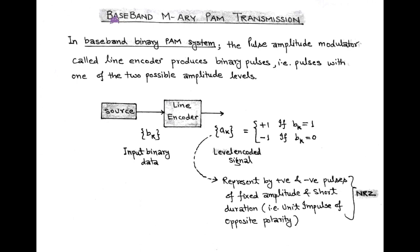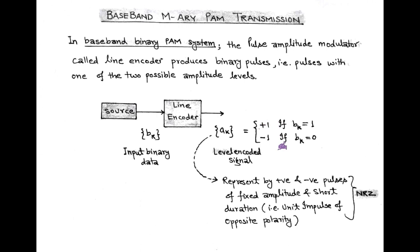Next, we are going to discuss baseband M-ary PAM transmission. As discussed in our last video lecture about the baseband binary PAM system: in this system, the pulse amplitude modulator — called a line encoder — produces a binary pulse having one of two possible amplitude levels denoted Ak. The value of Ak is +1 for input Bk = 1 and −1 for input Bk = 0. This level-encoded signal is based on non-return-to-zero (NRZ) coding and represented by positive and negative pulses of fixed amplitude, corresponding to binary symbol 1 or 0.